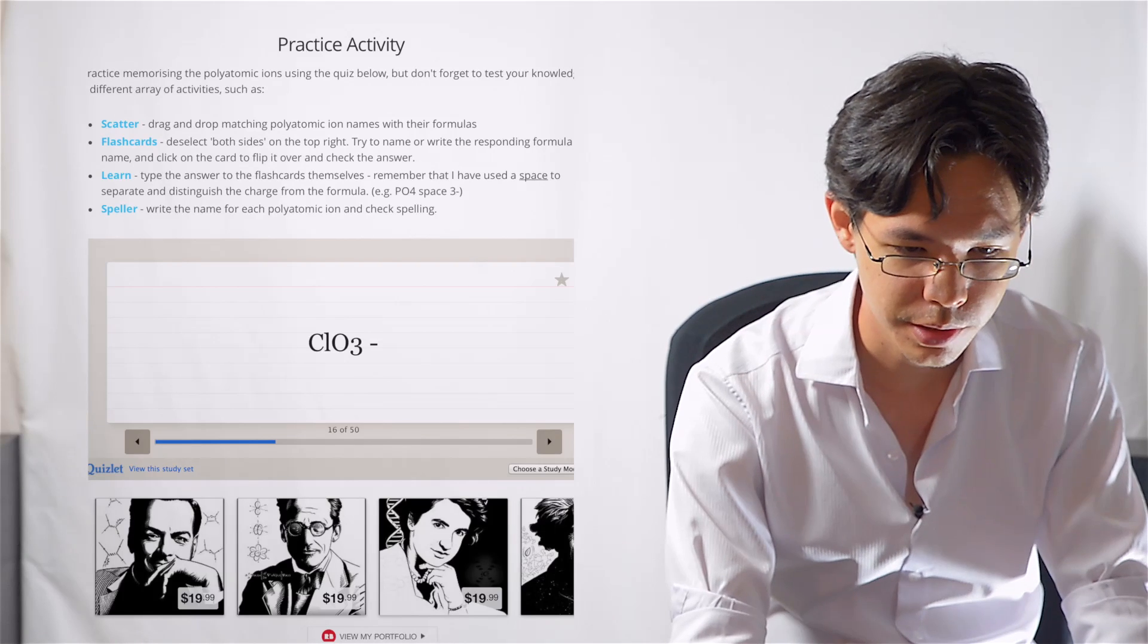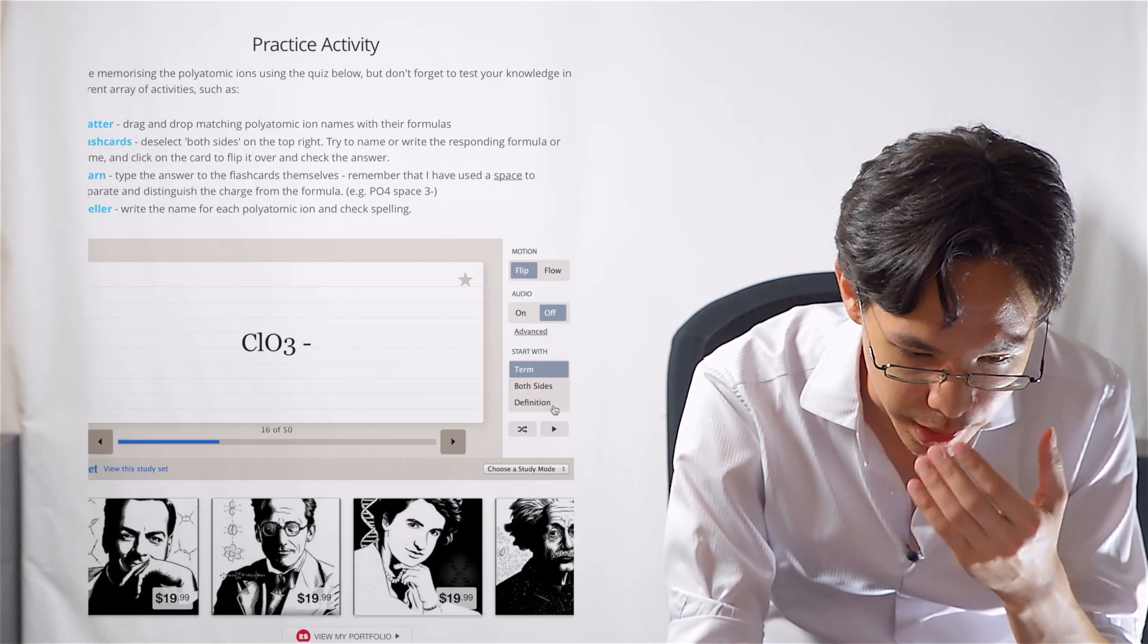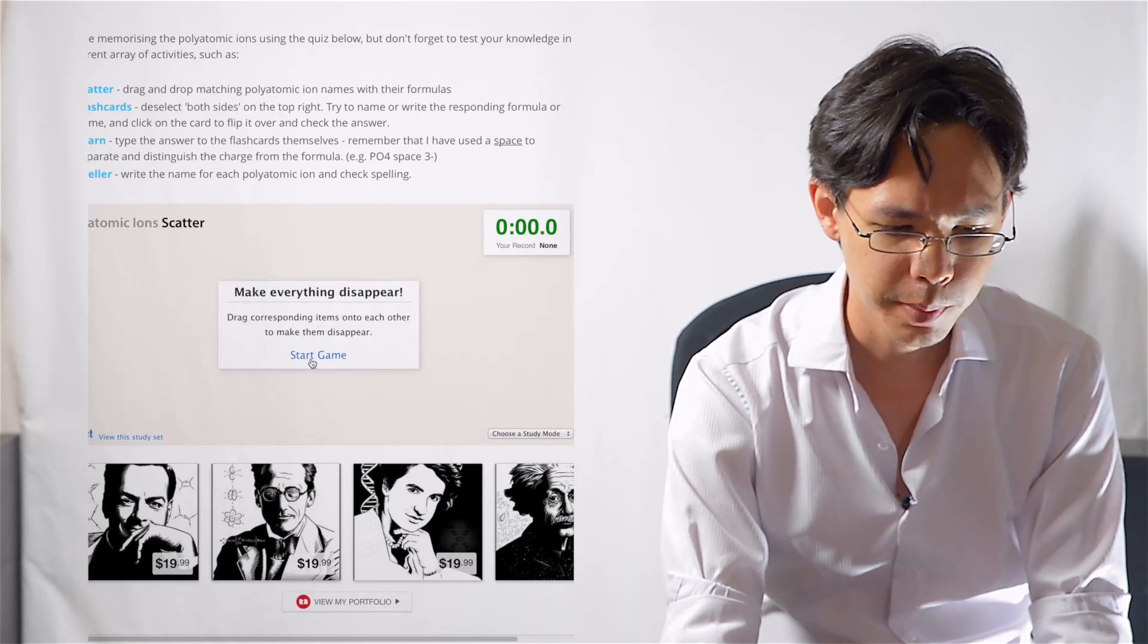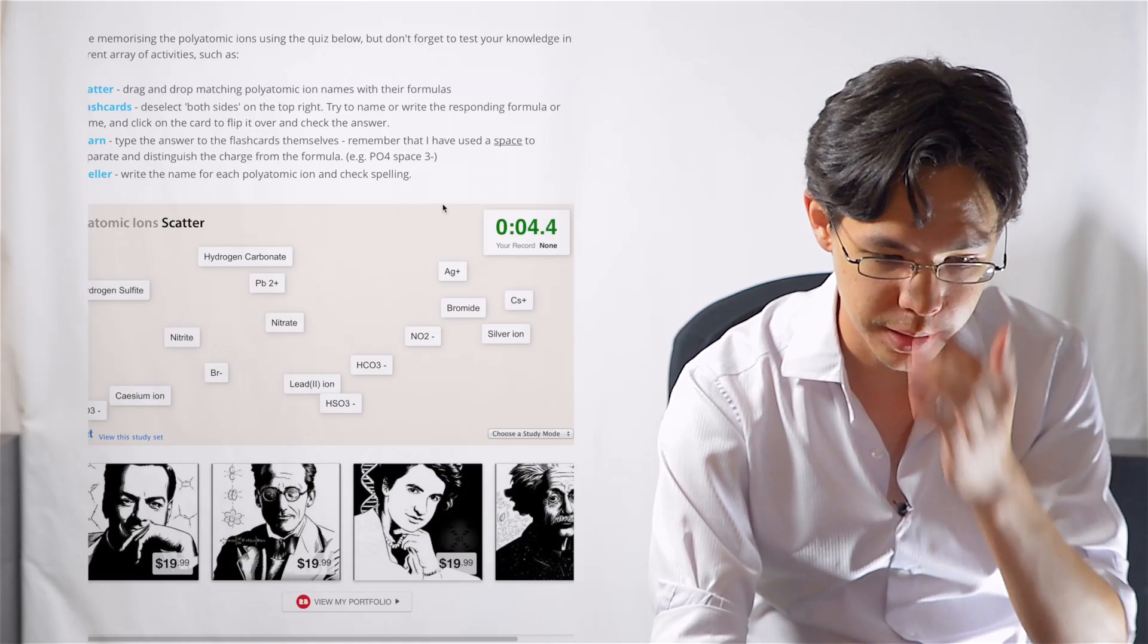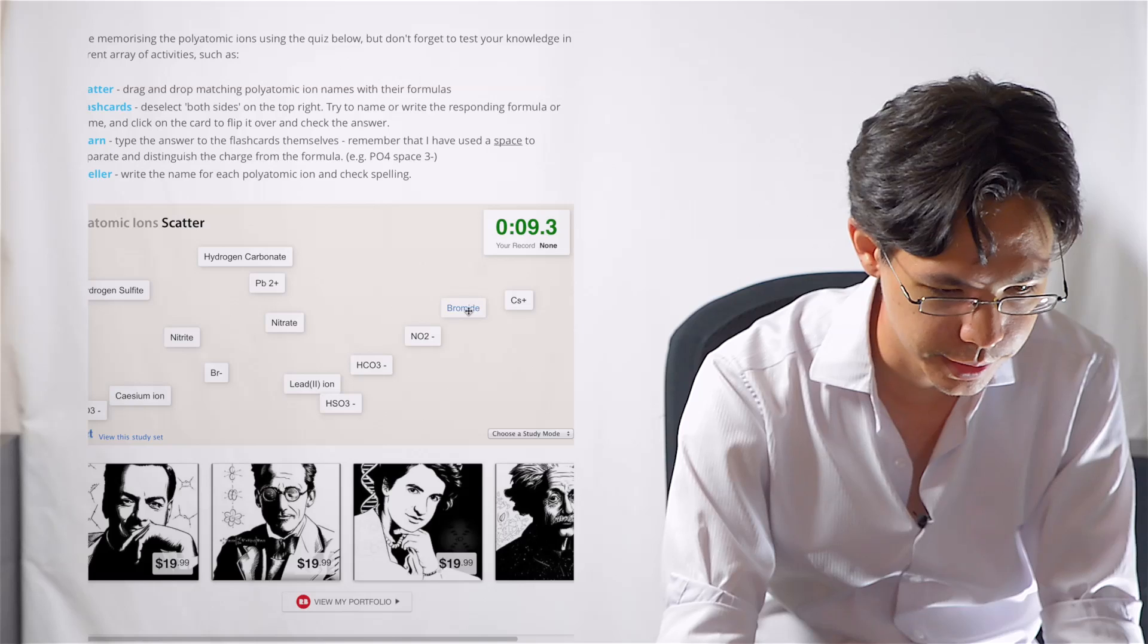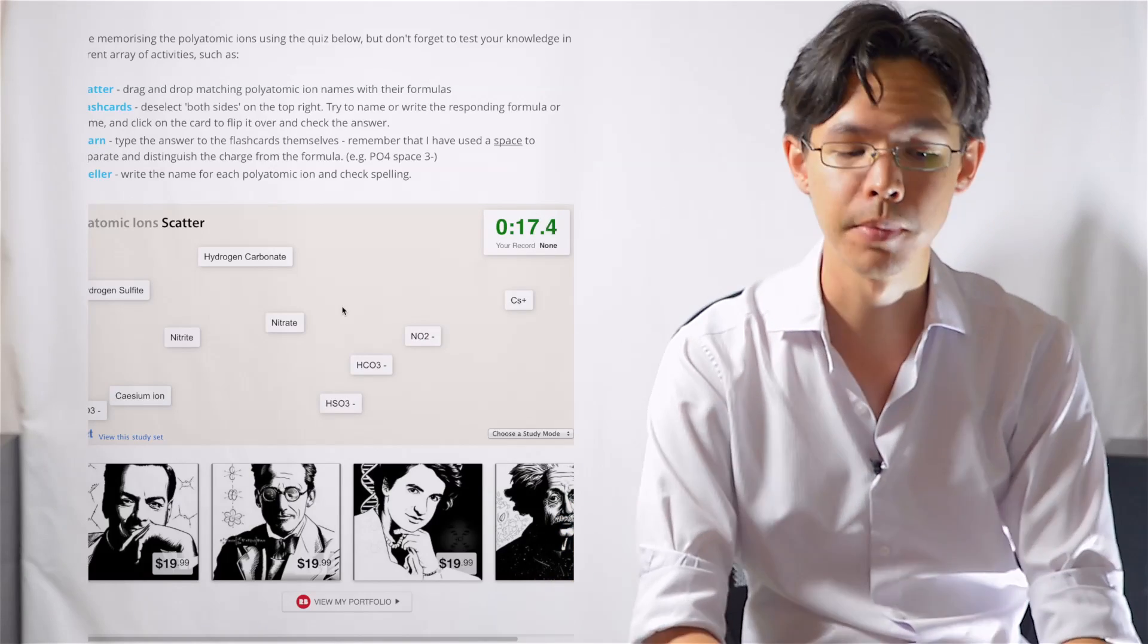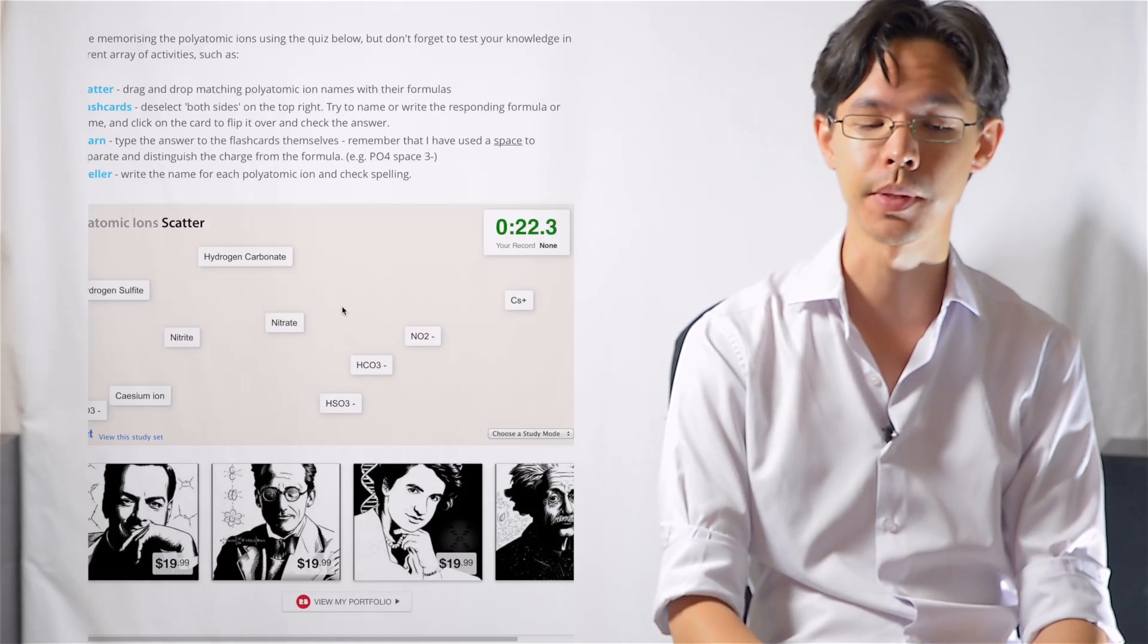There's also other activities here. One of my favorite types is to play scatter. So when you click the scatter mode, you basically drag and drop the name and the formula together and you basically learn them that way. So silver is argentum, bromide's BR, so link them up. And lead, so lead should be somewhere around here, Pb2+, and so on and so forth. And you can memorize them that way. And it's a lot more fun than just having flashcards.